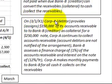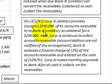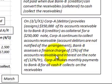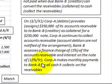For example, on 1/31/X1, Corporation A assigns $350,000 of its accounts receivable to Bank B as collateral for a $250,000 note they will receive from Bank B. Corporation A will continue to collect the accounts receivable, and the account debtors are not notified of this arrangement. Bank B assesses a finance charge of 1% of the accounts receivable and interest of 12% per year on the note.